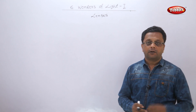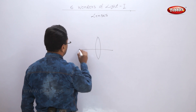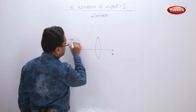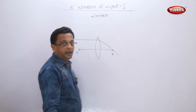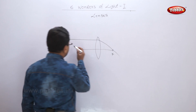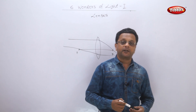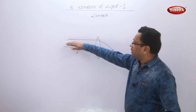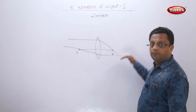Before drawing figures, remember two things. If a ray is parallel to the principal axis, the refracted ray will pass through the focal point. And if a ray passes through the focal point, the refracted ray will be parallel to the principal axis.